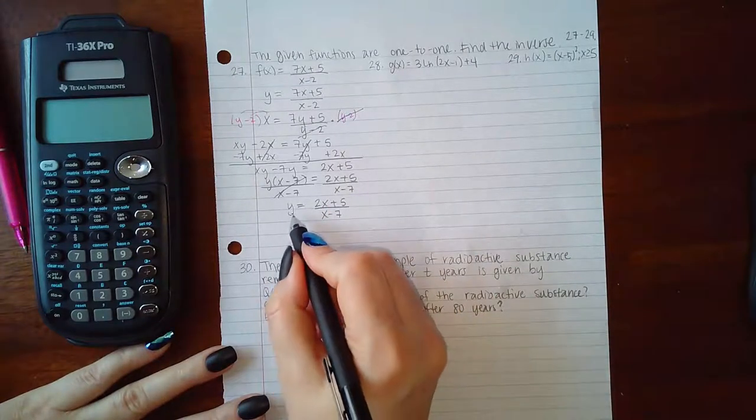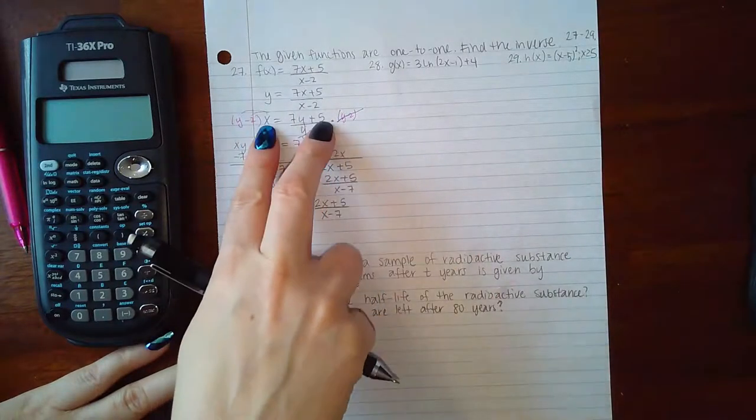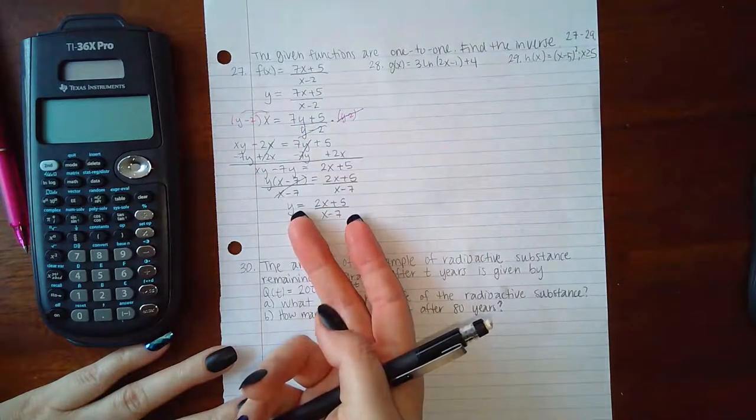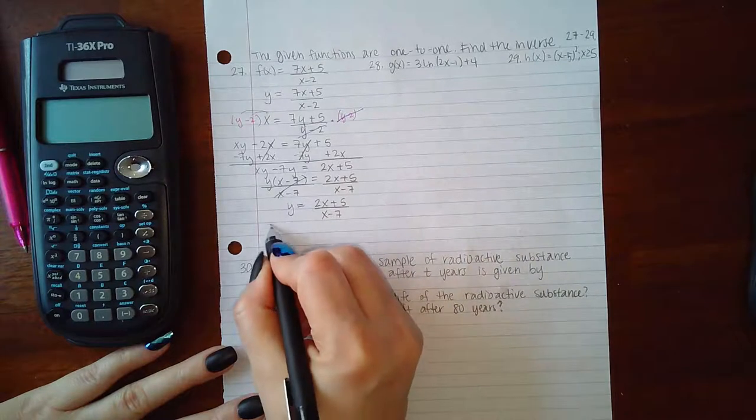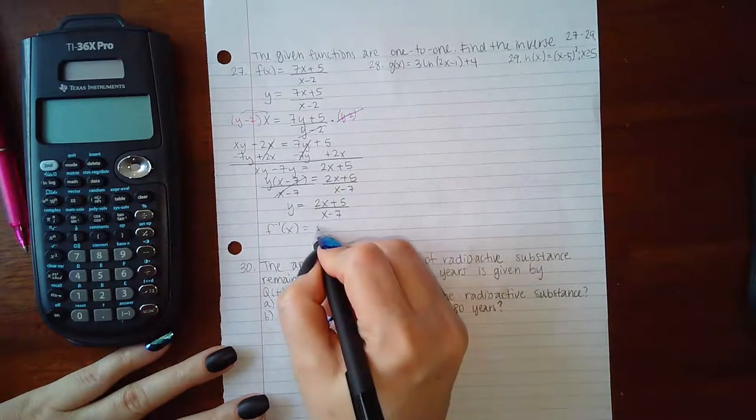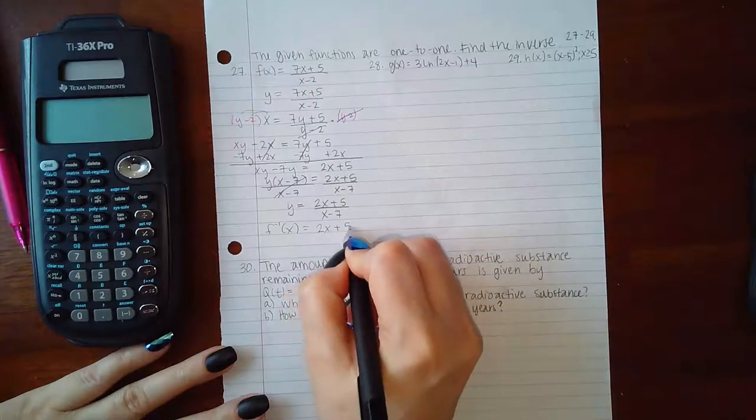Then the last step is to change the notation. Since as soon as I interchange the variables I was no longer talking about f of x, I was now talking about f inverse of x, and so this y needs to become f inverse of x.